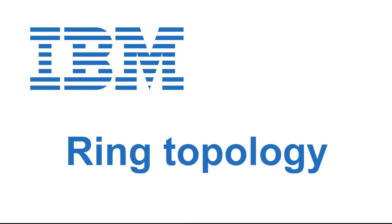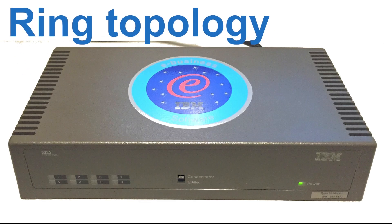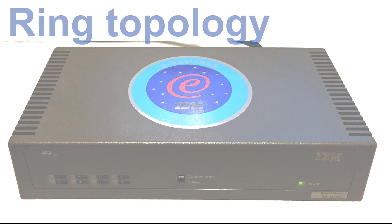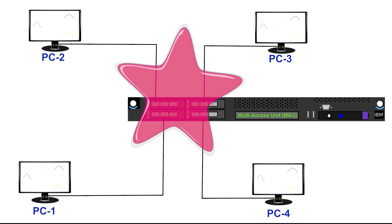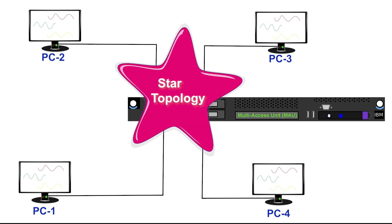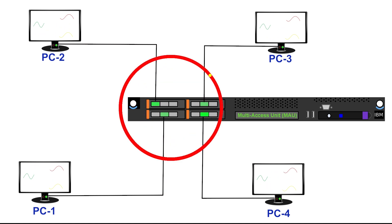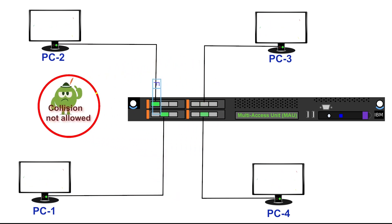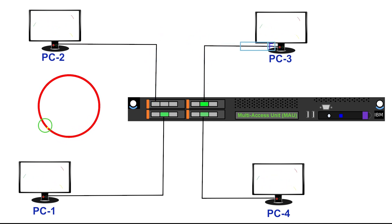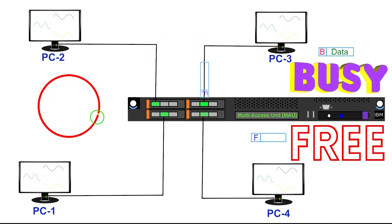This topology is called the ring topology. A ring topology uses a multi-access unit at the center of the network. All nodes connect to it, forming a star-like layout. Although it uses a star topology for physical layout or cabling, electrically this network behaves like a ring, where signals travel around the ring to each node in turn. It uses a token passing method to eliminate all possibilities of collision. A token logically circulates in the network ring and has two states: free and busy.